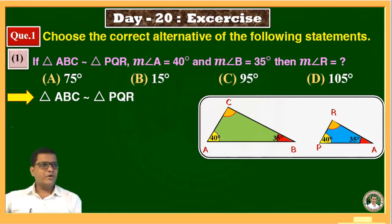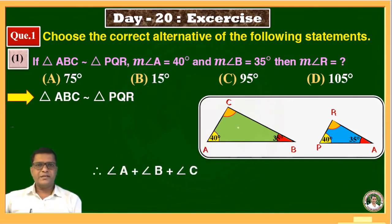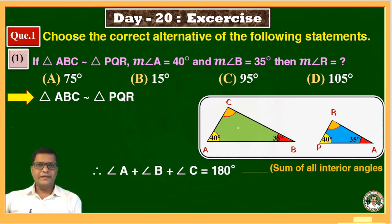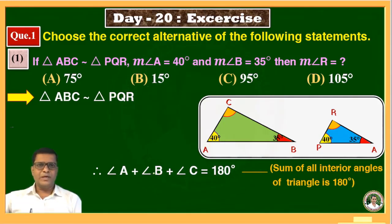We know that the sum of the angles of a triangle is 180 degrees. Therefore, angle A plus angle B plus angle C is equal to 180 degrees. The reason is: the sum of all interior angles of a triangle is 180 degrees. Putting the values of A and B: 40 plus 35 is 75, so 180 minus 75 gives angle C equal to 105 degrees.